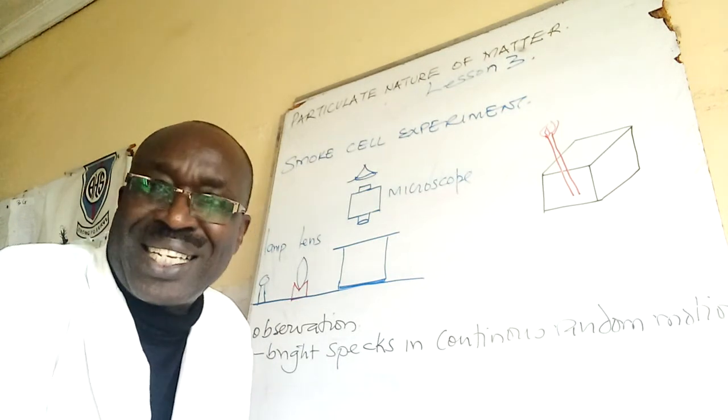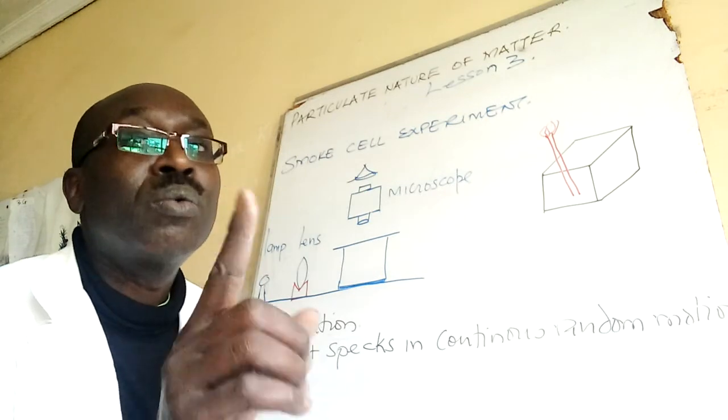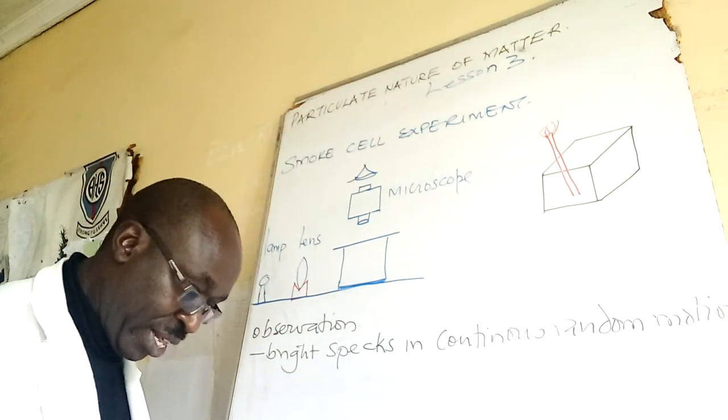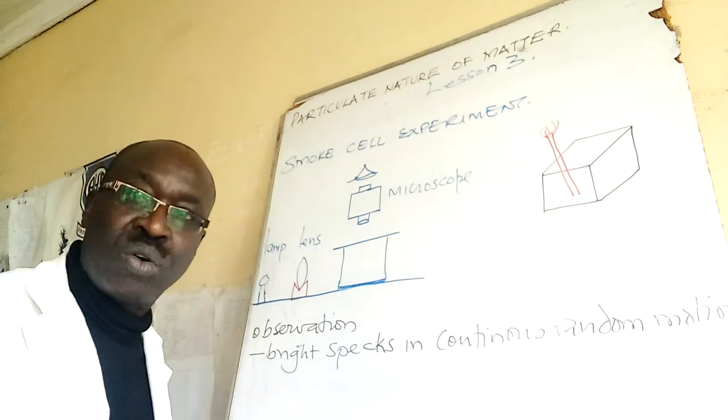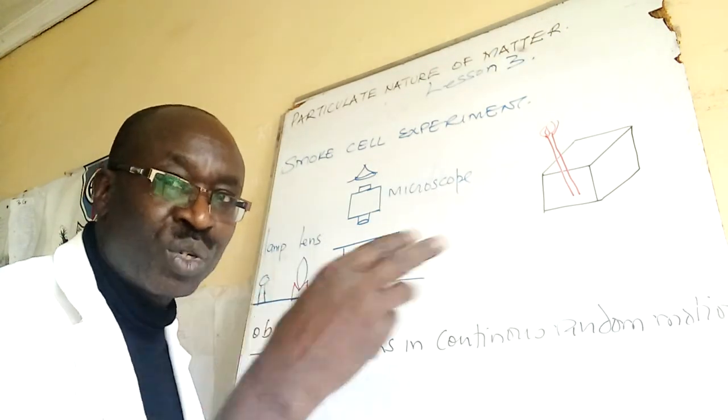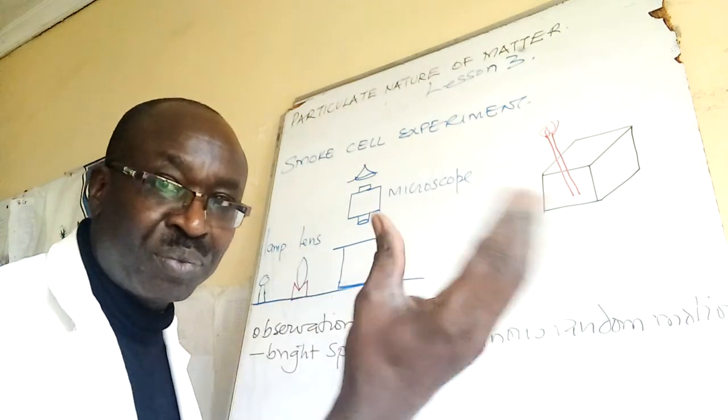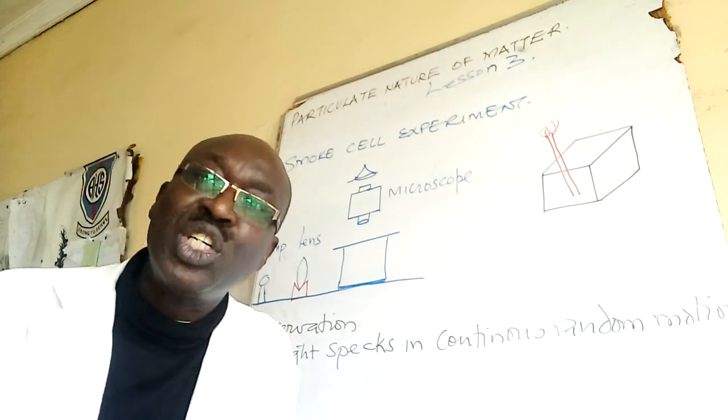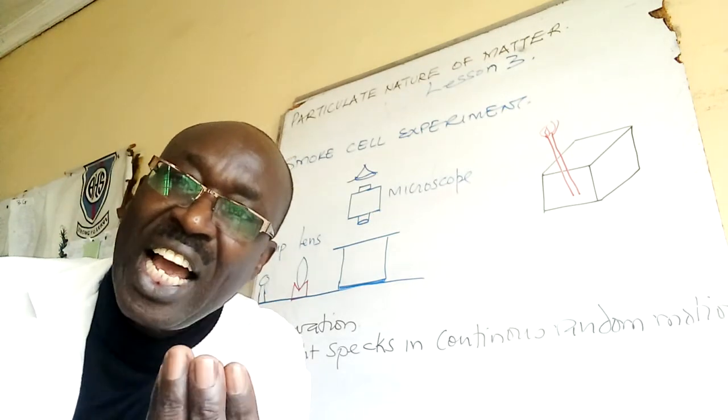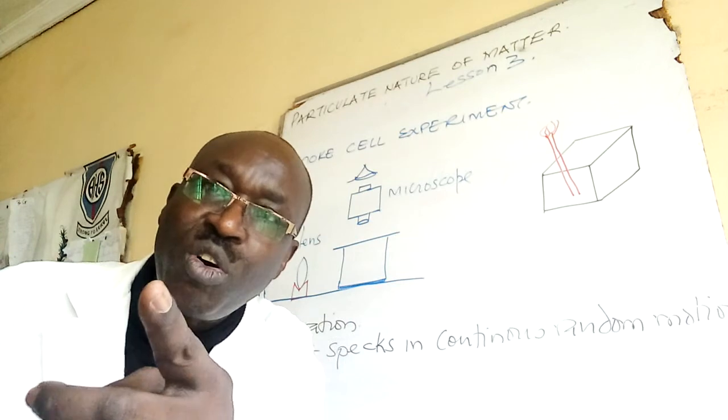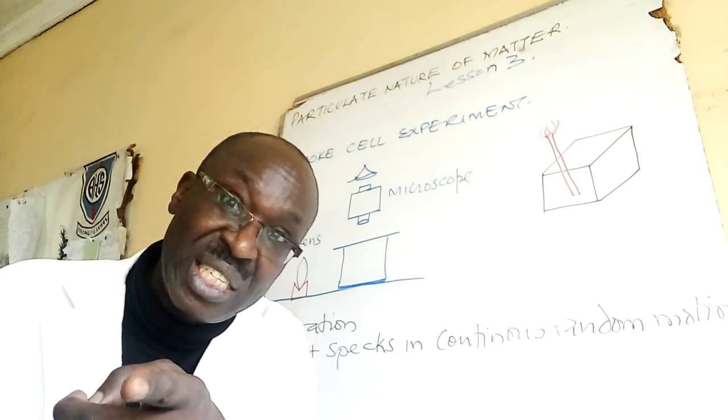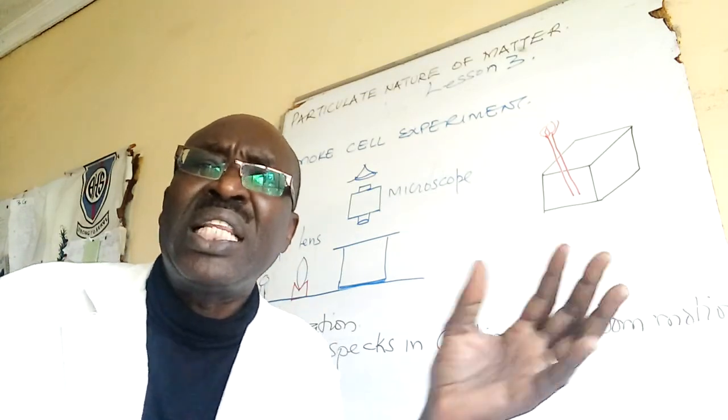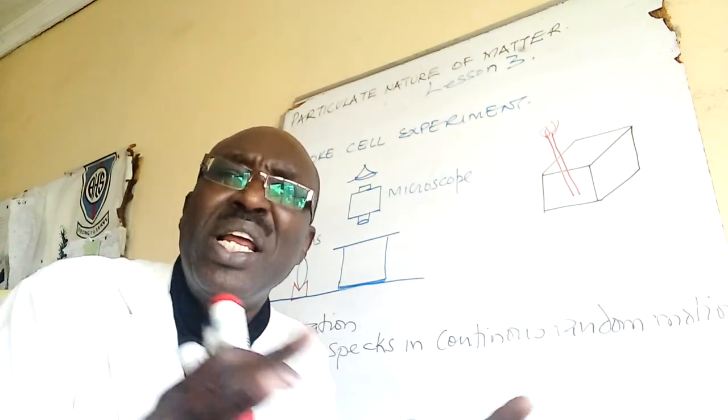What are we using to help us study the particles of air? Smoke. What do we require? We require a few things here and there. One, we require a drinking straw. What else? A smoke cell. A cell is a small compartment.